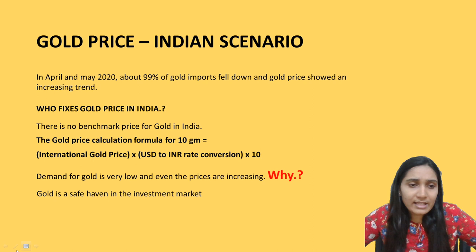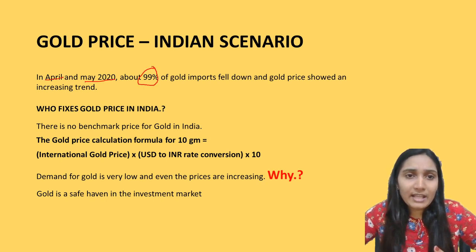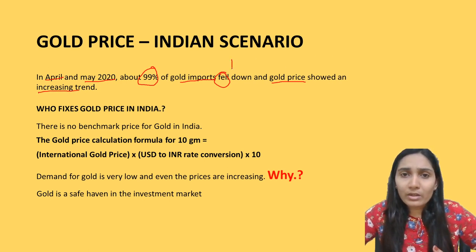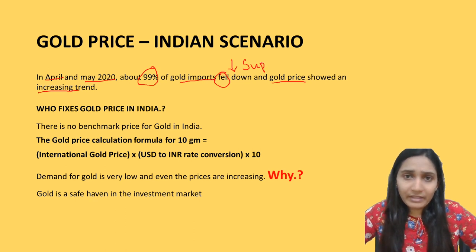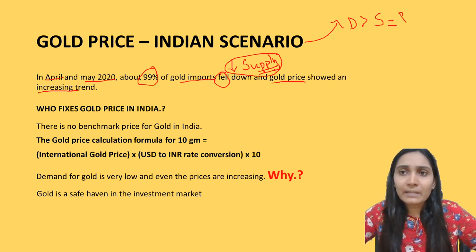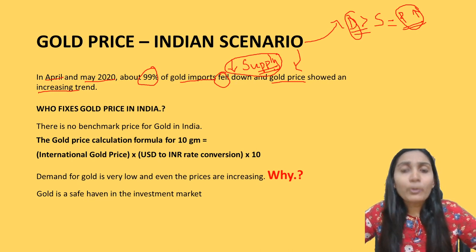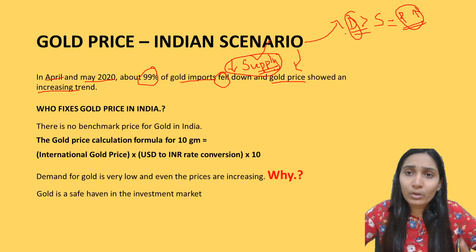Now let's analyze the reasons behind the gold price increase in the Indian scenario. In April and May 2020, about 99% of gold imports fell, yet gold prices showed an increasing trend. When the import of gold falls, it means the supply of gold is lesser. When demand is higher than supply — meaning there is inadequate supply to meet present demand — prices will be high. Import of gold has fallen, indicating lesser supply, and we will see what happened to demand.